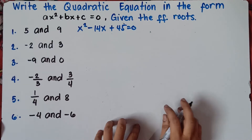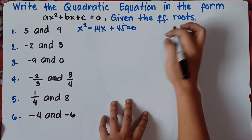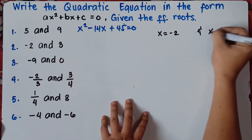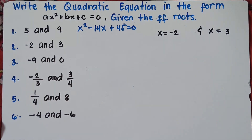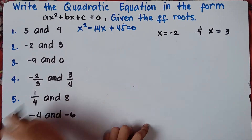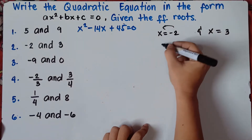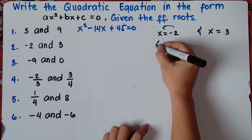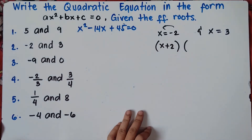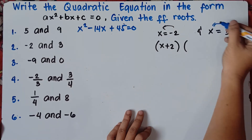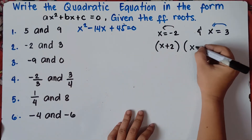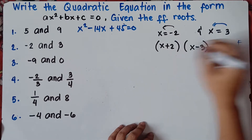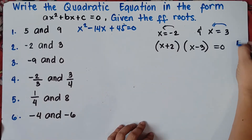Let's try number 2. For x equals negative 2 and x equals 3, we transpose negative 2 from right to left — this will be x plus 2. This is negative 2, so it becomes positive 2. Then for positive 3, transpose to get negative 3, giving x minus 3. Then equals 0. Use the FOIL method. First: x times x equals x squared.